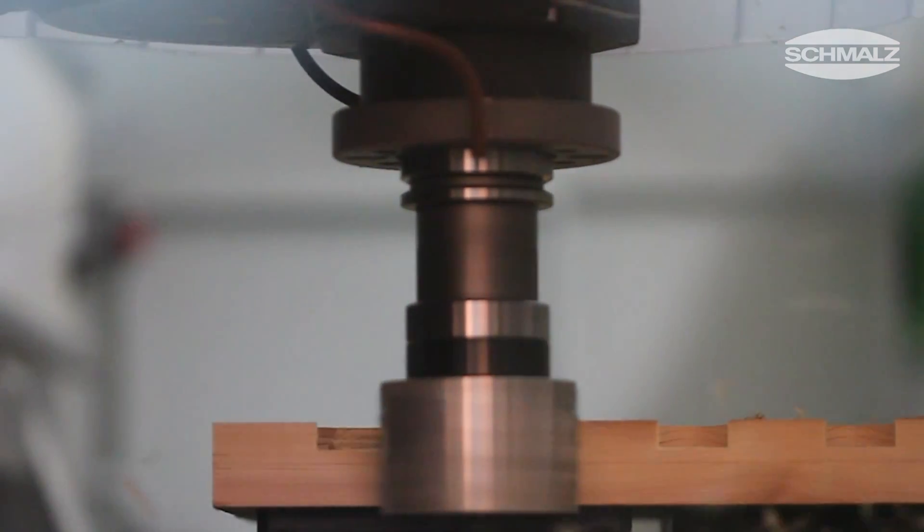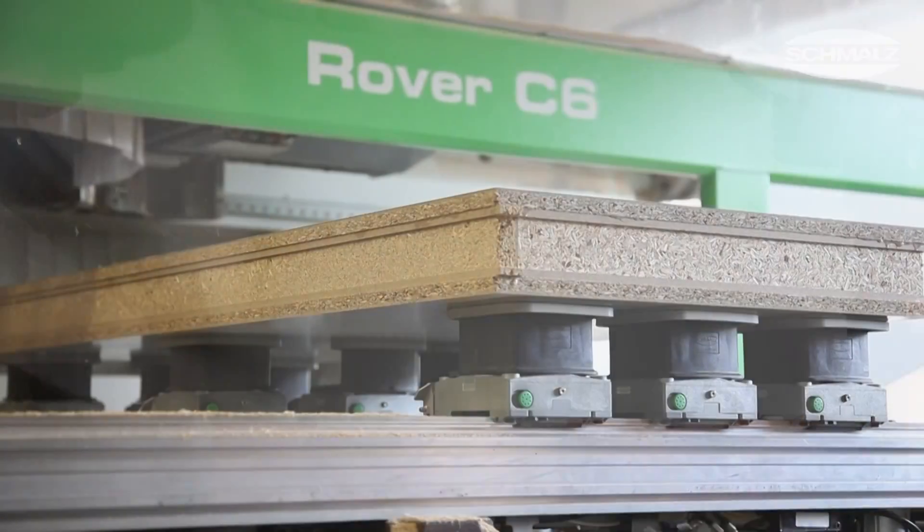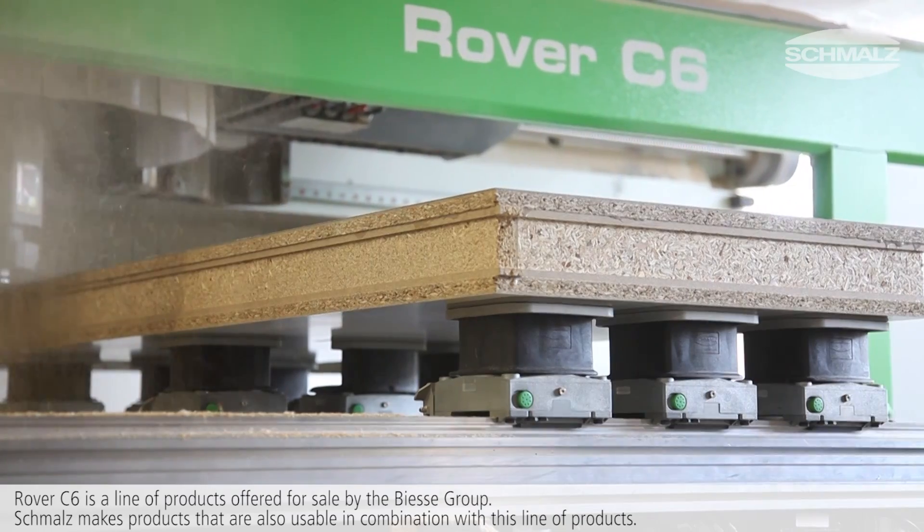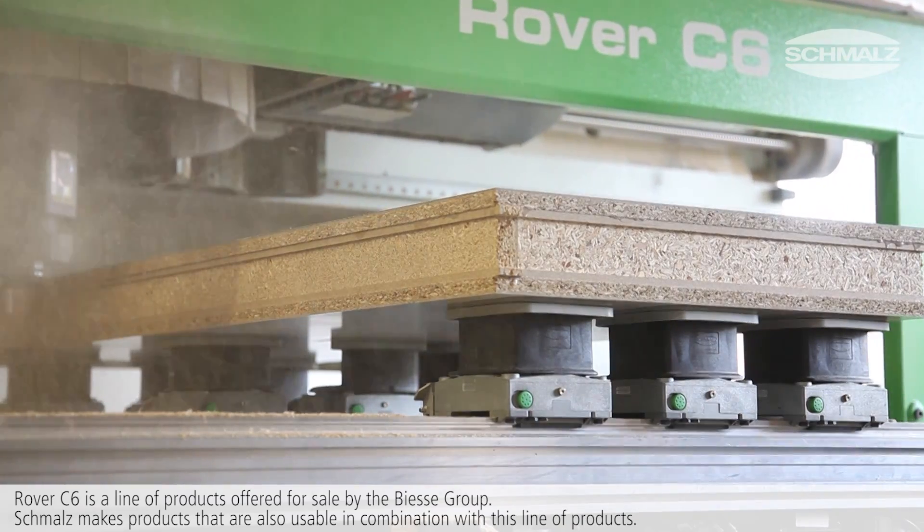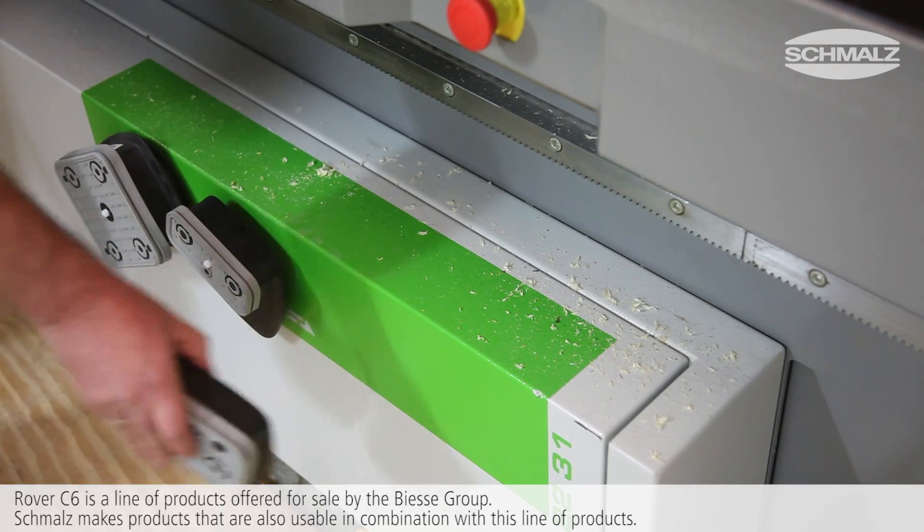As the worldwide leader for vacuum clamping, Schmalz has the ideal solution for most CNC machining centers in the woodworking industry. Schmalz is the OEM for vacuum blocks, consoles and accessories for almost two-thirds of all point-to-point CNC machines delivered worldwide.